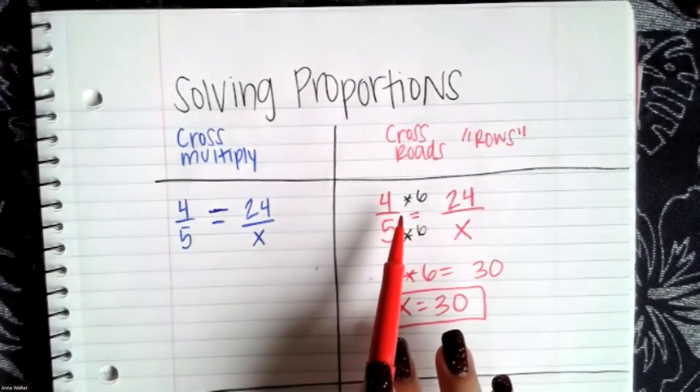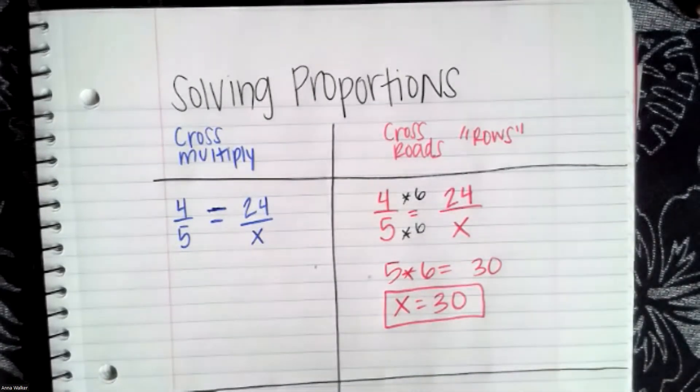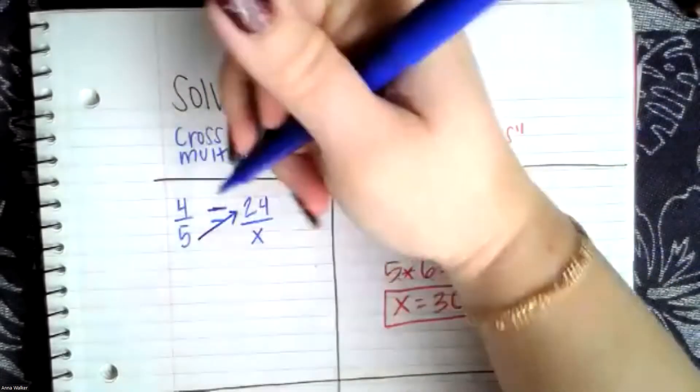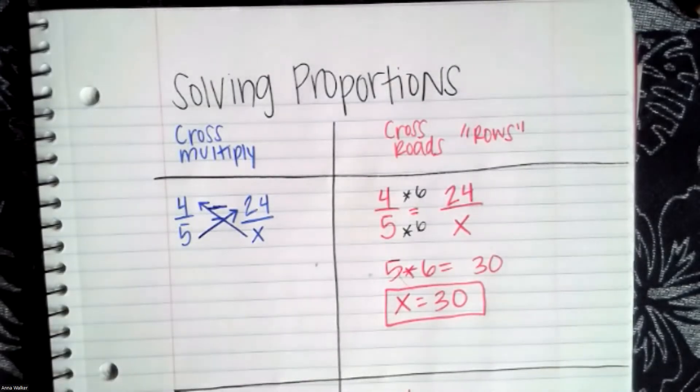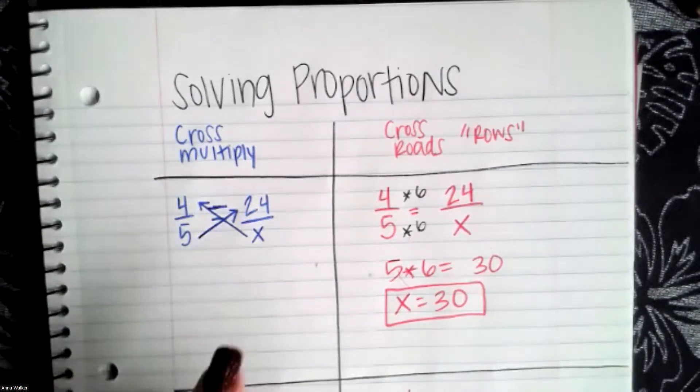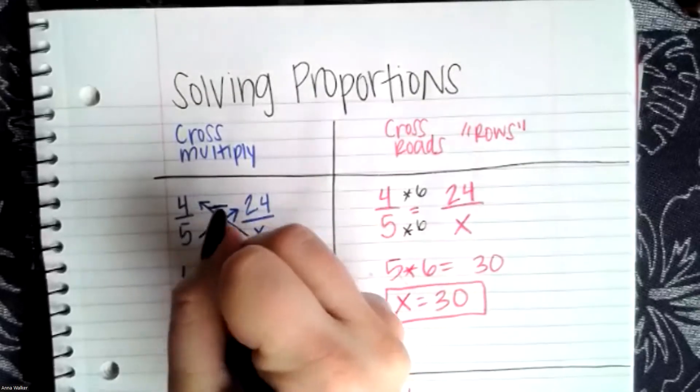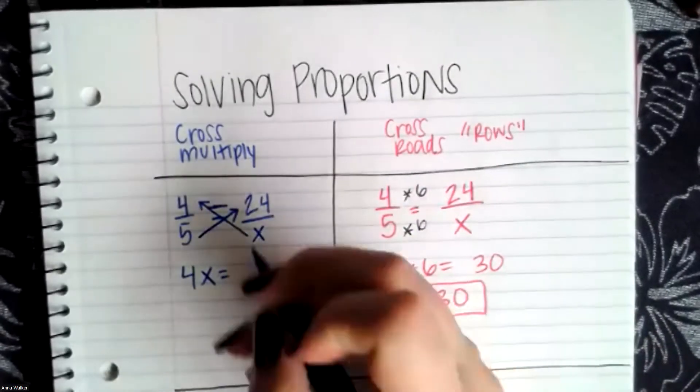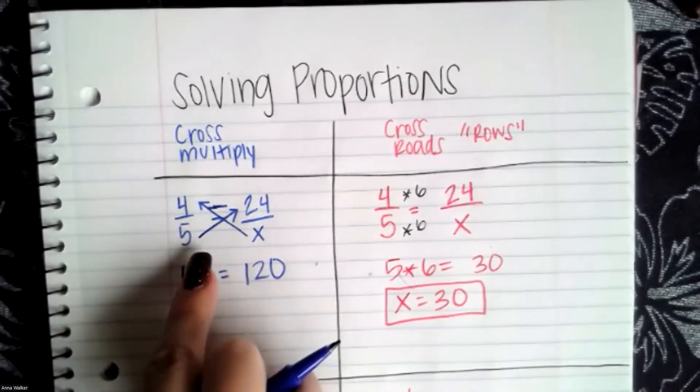So if it's possible to find a factor that increases or decreases, use the cross roads method. However, if it's not possible or if you just want to try a different way, we can use a method called cross multiply. When we cross multiply, essentially what we're going to do is we're going to multiply diagonally the values in the proportion and set up an equation that doesn't have a fraction and then solve using our properties. So I'm going to multiply four times X and set it equivalent to five times 24. Four times X is 4X, five times 24 is 120.